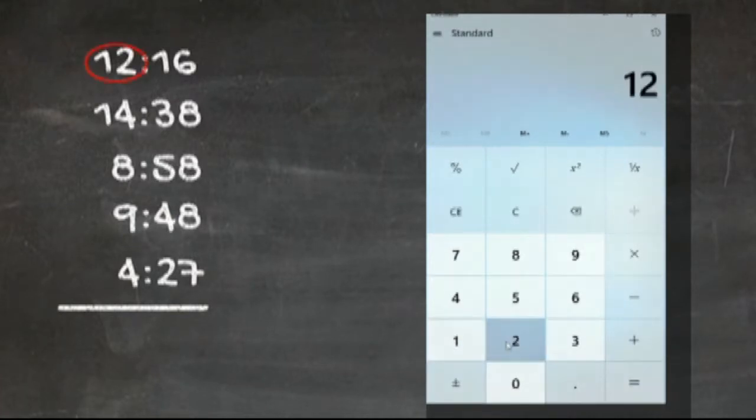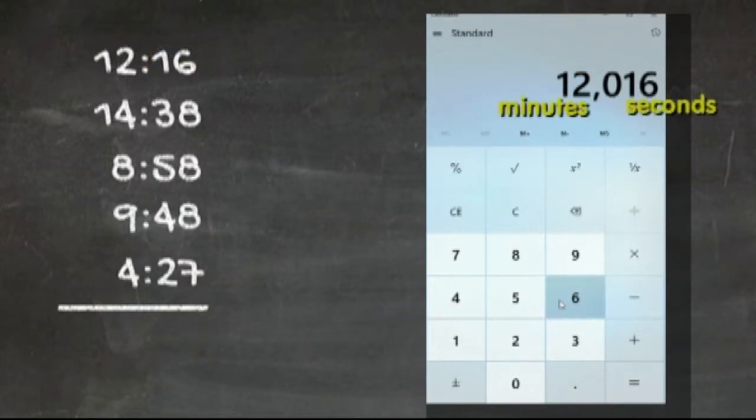Type in the minutes. In this example it's a 12. You can't add a colon, so instead type a zero. This zero performs two functions, which I'll get to momentarily. Then type in the seconds, which in this case is 16. Think of this number not as 12,016 but as 12 minutes and 16 seconds. The first function of the zero we added was to separate the minutes from the seconds visually.